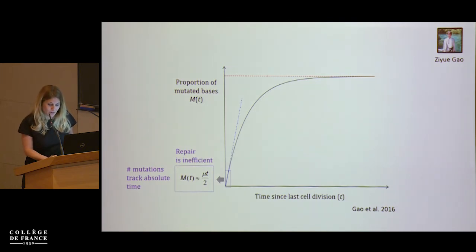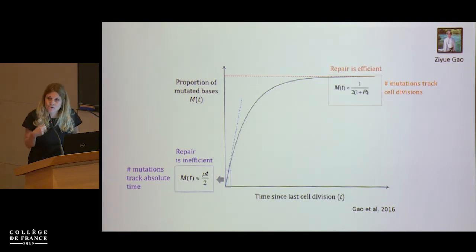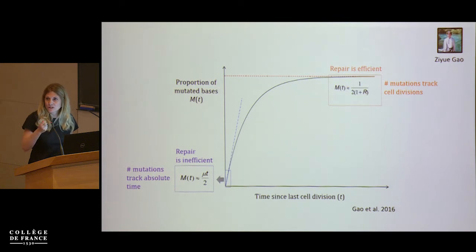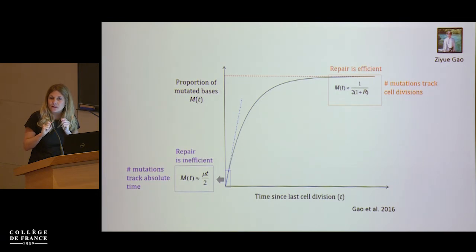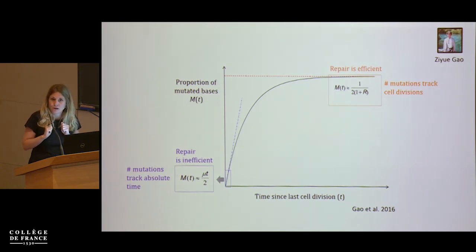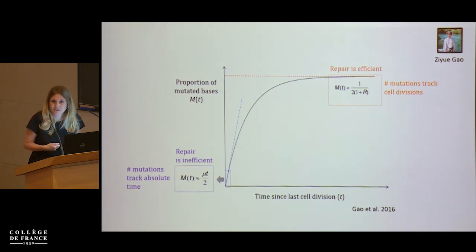This model has two limiting behaviors. In one limit, repair is really inefficient relative to the cell cycle length: repair doesn't matter and mutations accrue in proportion to absolute time, assuming a fixed instantaneous damage rate. In the other limit, when repair is very efficient relative to the cell cycle, you reach an asymptote where even though mutations are non-replicative in origin, the cell inherits a fixed number of mutations more or less independent of the time since the last division — because the errors that become mutations are those occurring right before replication.